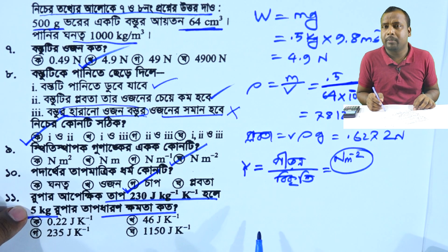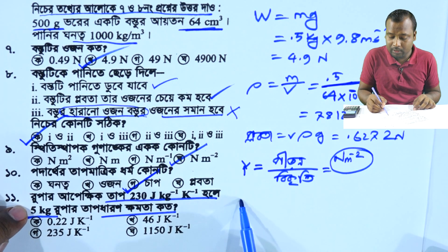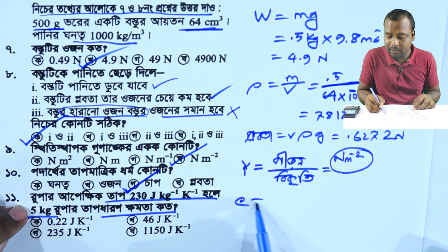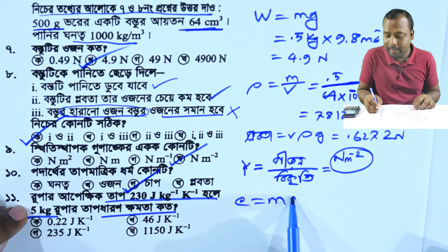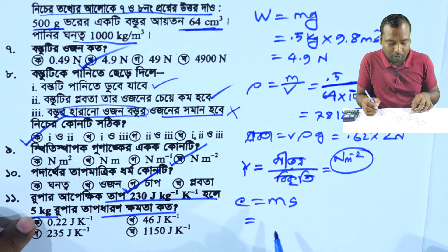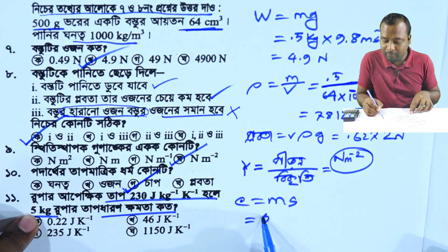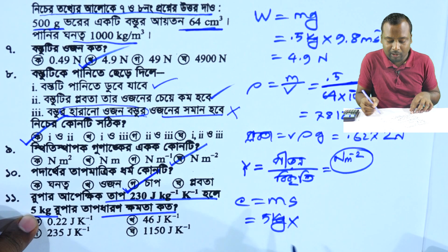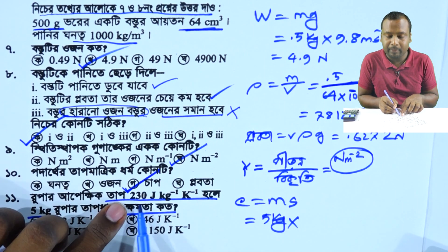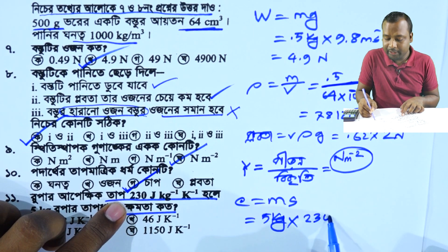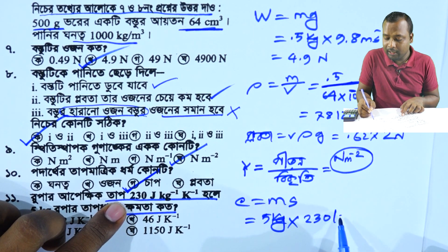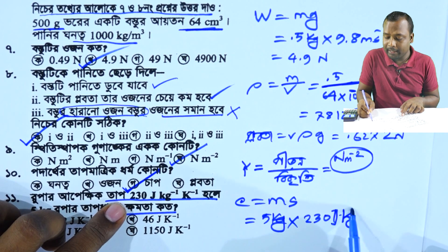If you get the value, the value of that is M. M is a value of 5 kg, and the value of S is 2, 3 J per kg, A.